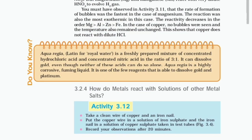In Activity 3.11, the rate of bubble formation was fastest in the case of magnesium, which was also the most exothermic reaction. The reactivity decreases in the order: Mg, Al, Zn, Fe. In the case of copper, no bubbles were seen and temperature remained unchanged, showing that copper does not react with dilute HCl. Do you know? Aqua Regia (Latin for 'Royal Water') is a freshly prepared mixture of concentrated hydrochloric acid and concentrated nitric acid in the ratio of 3:1. It can dissolve gold, even though neither of these acids can do so alone. It is one of the few reagents able to dissolve gold and platinum.